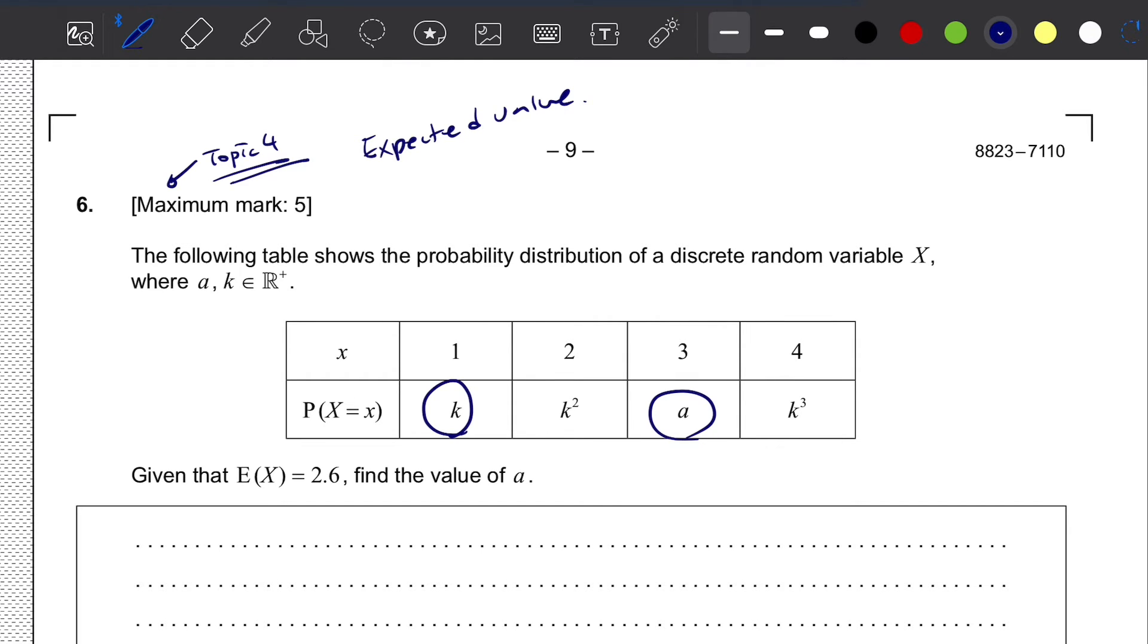We know that 1 times k plus 2 times k squared plus 3 times a plus 4 times k cubed equals 2.6. However, having only one equation doesn't solve our issue since we have two unknown variables. We need two equations to solve those. So we're going to set another equation using the concept that probabilities always add up to 1. We know that k plus k squared plus a plus k cubed equals 1.